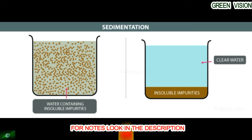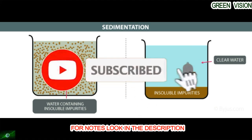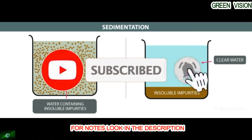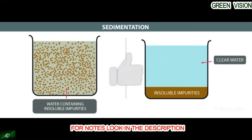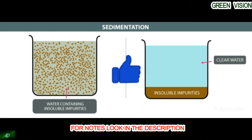Lighter impurities float while the heavier rice grains sink to the bottom. This is called sedimentation. The water with the impurities is then carefully poured away, leaving the clean rice at the bottom. This is called decantation.